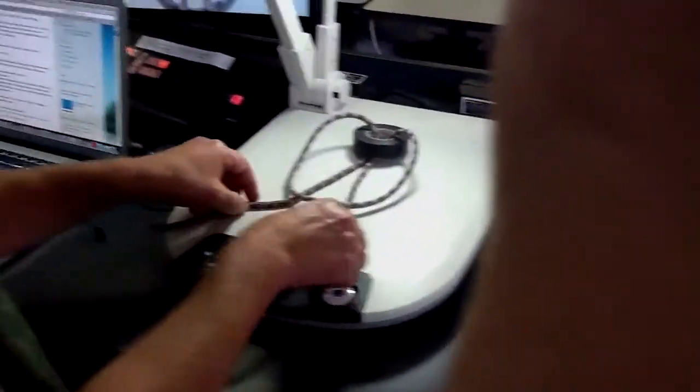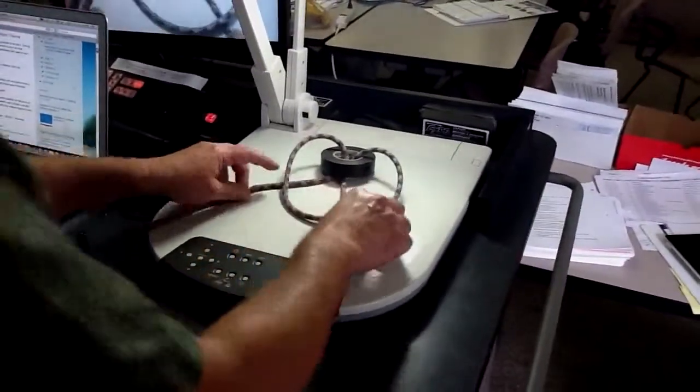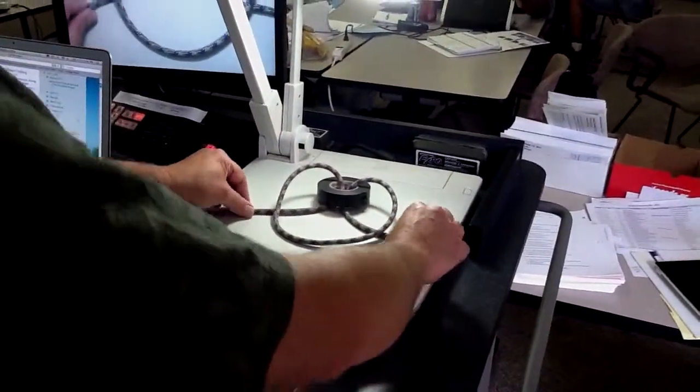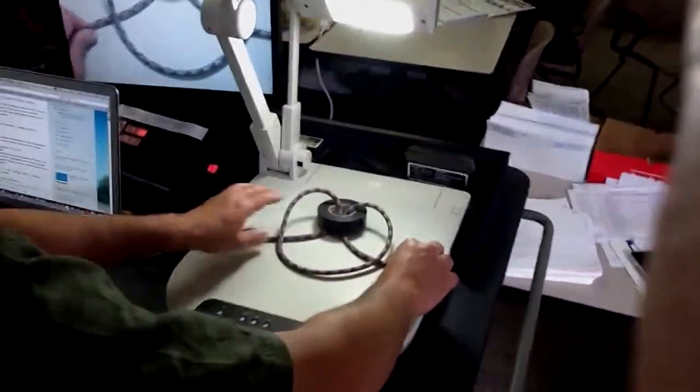So we've pulled our line through. This is not too bad. Pull these out to the side, the tag end and the running line. They're underneath the big loop.